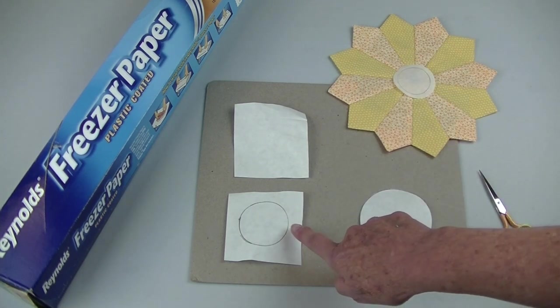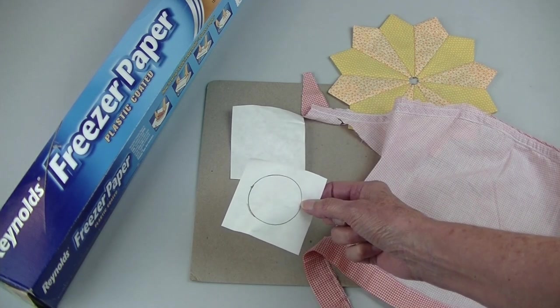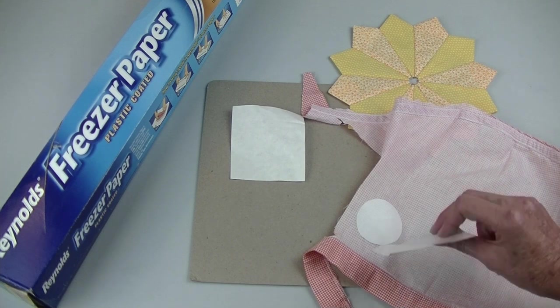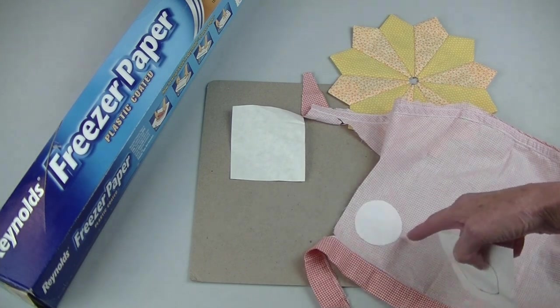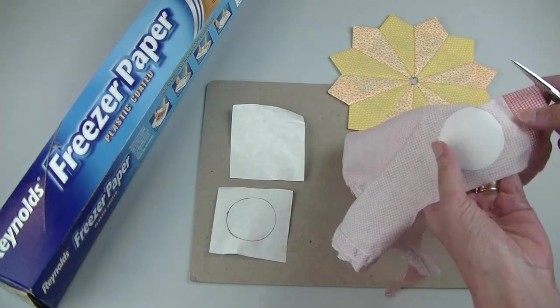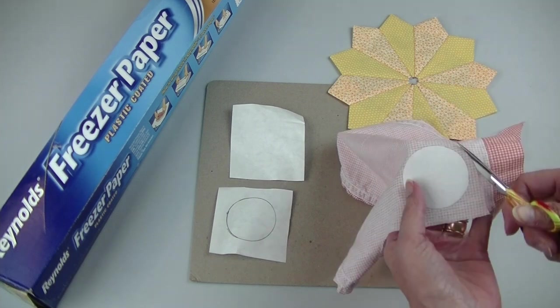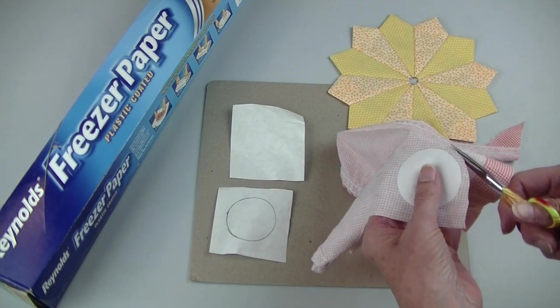I decided I'd like the circle two inches big but any size will do. After I cut out the circle I placed the shiny side down on the back of my fabric and I pressed with a hot dry iron. As you can see you don't have to buy new fabric for your circle. You can use scraps. This is the sleeve from an old shirt that I'm using.